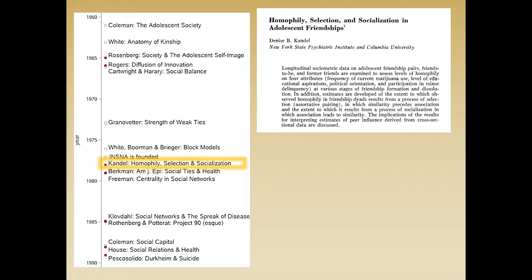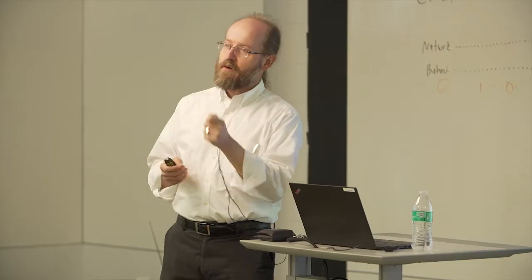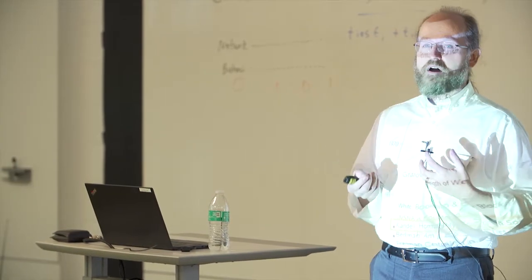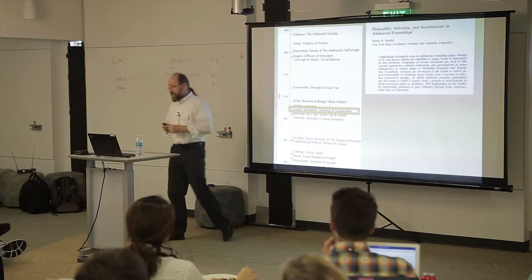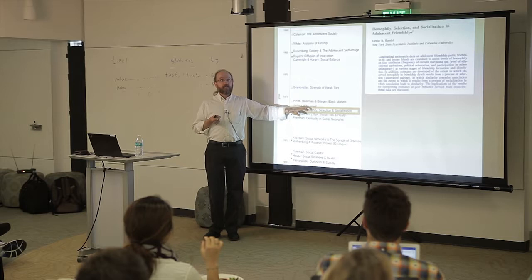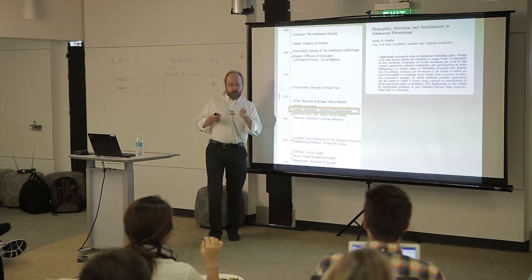Probably the next big thing from a health standpoint is Denise Kandel's work on homophily, selection, and socialization that came out around 1978 or 1979. This was the first piece that really hammered home the notion that the association between network alters is not causal. There is a mixture model going on between selection and influence, and most of our models have severely overestimated peer effects. This was a shot across the bow for network folks.